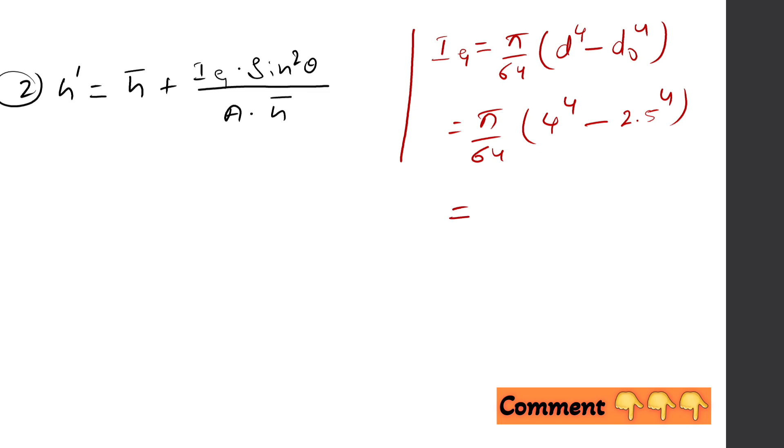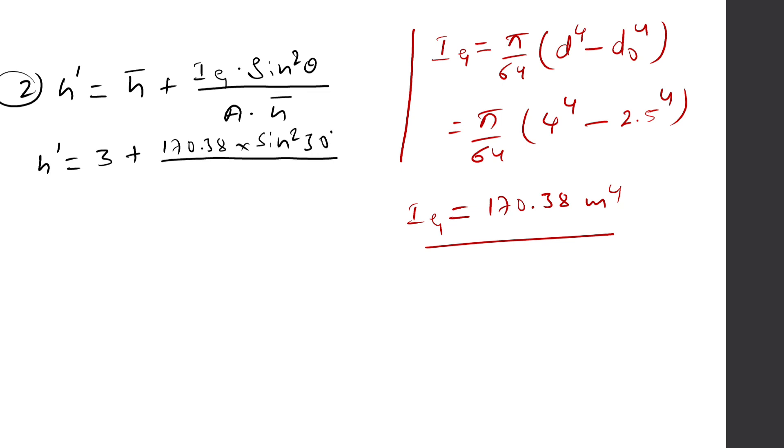After solving this equation, we will get 170.38 m⁴. Therefore, h' equals h̄ is 3 meters plus Iz is 170.38 times sin² 30 degrees divided by 7.67 times 3 meters.